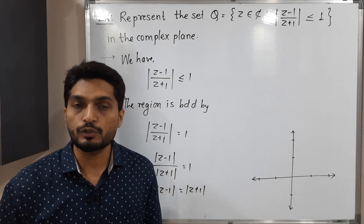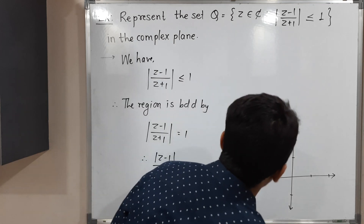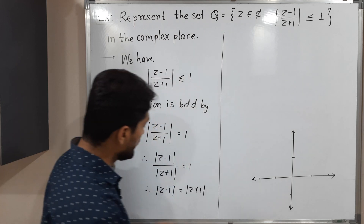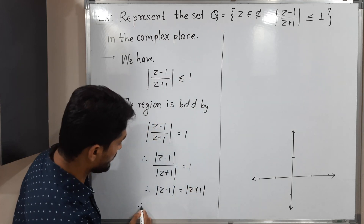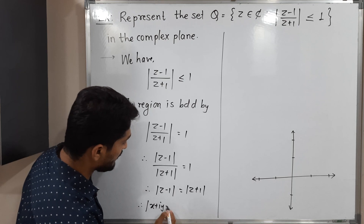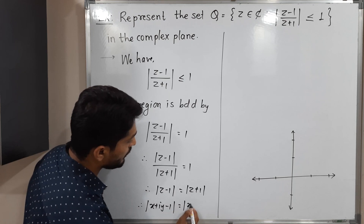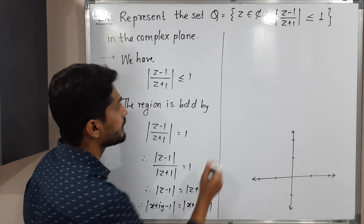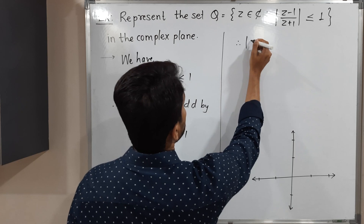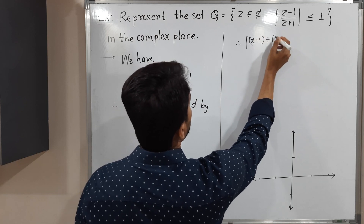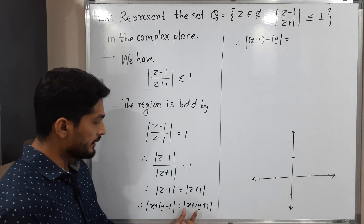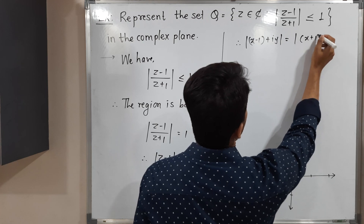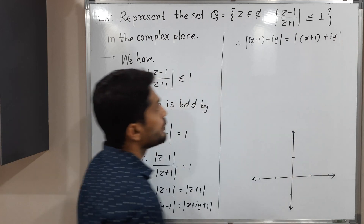We replace Z by its Cartesian form X plus iY. So we write: mod (X plus iY minus 1) equals mod (X plus iY plus 1). Collecting real and imaginary parts: the left side has real part (X minus 1) and imaginary part Y, and the right side has real part (X plus 1) and imaginary part Y.